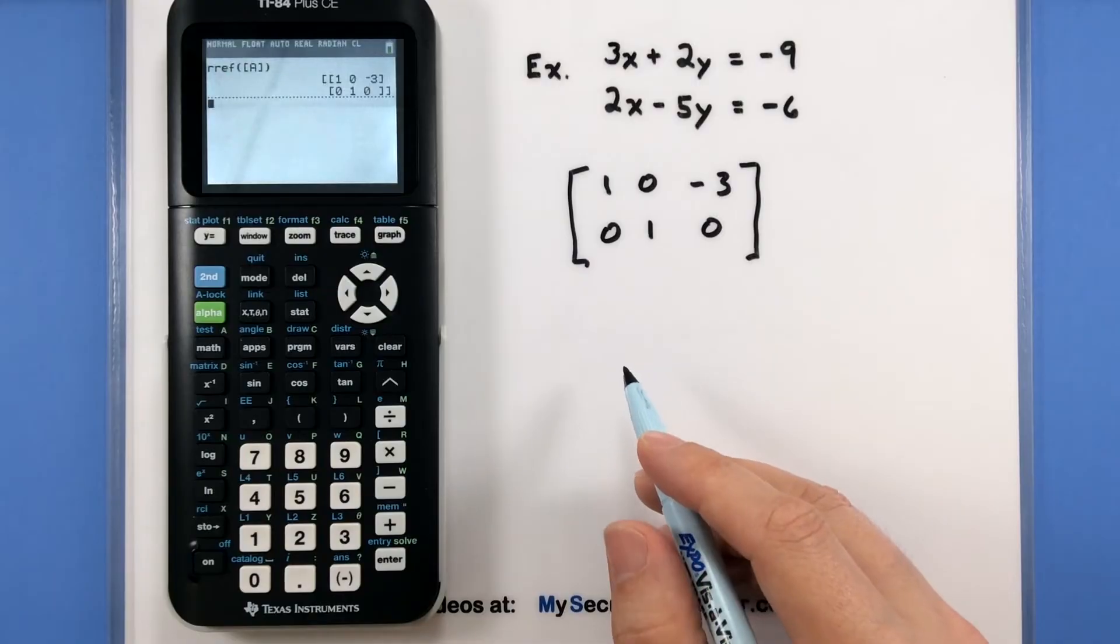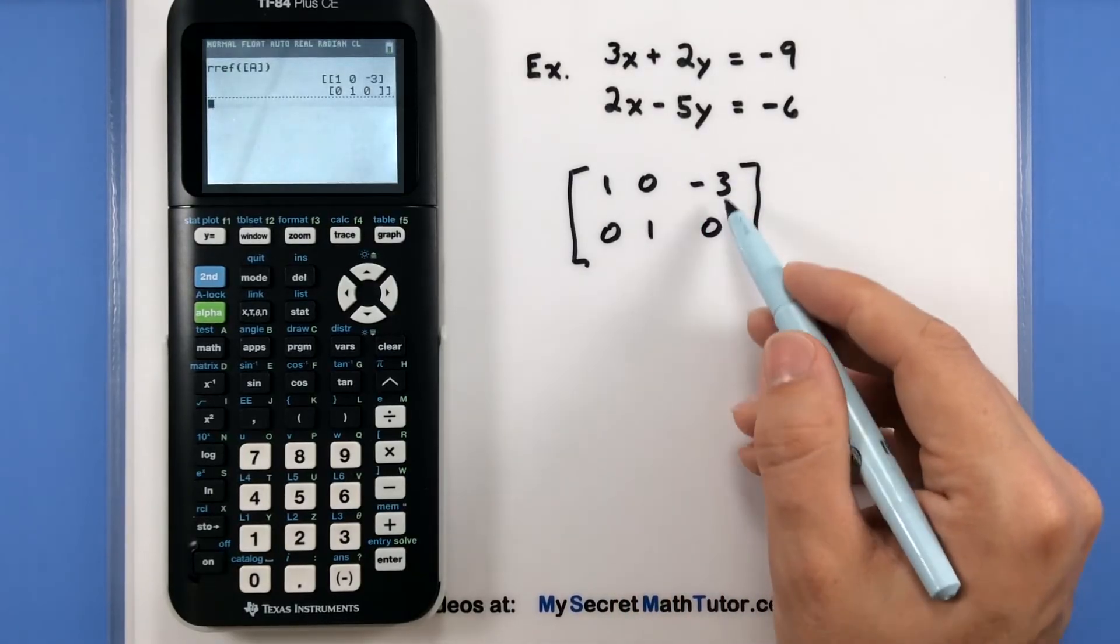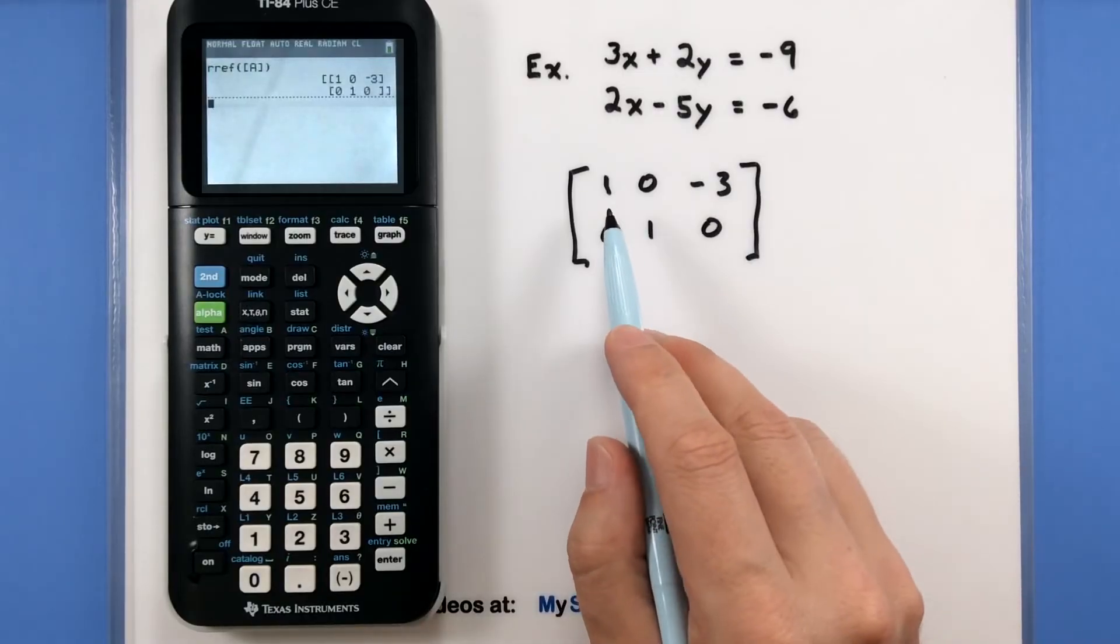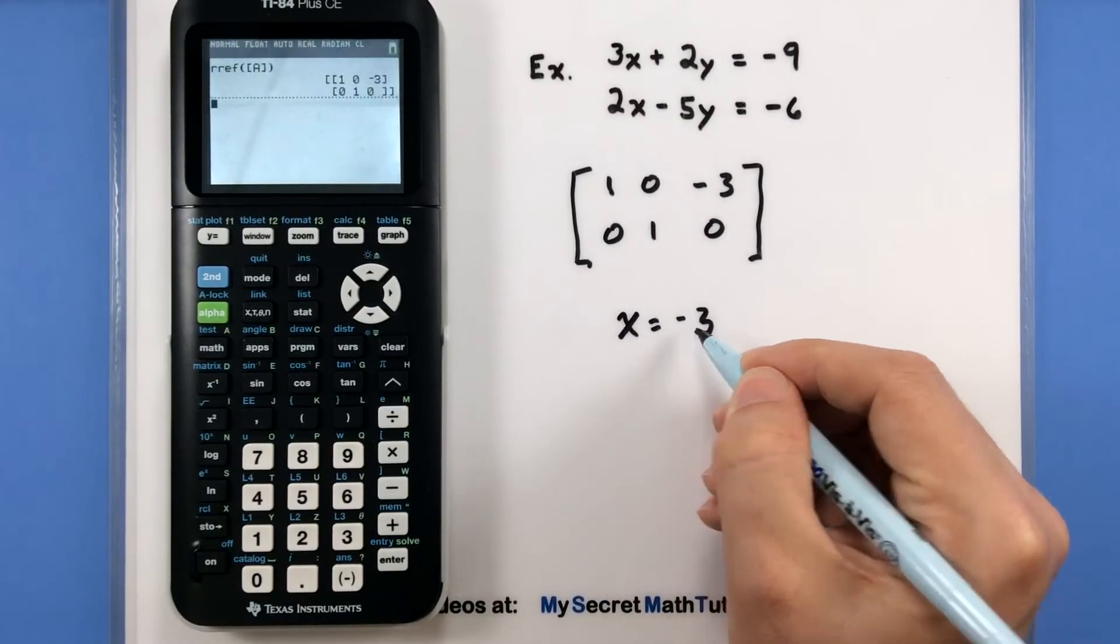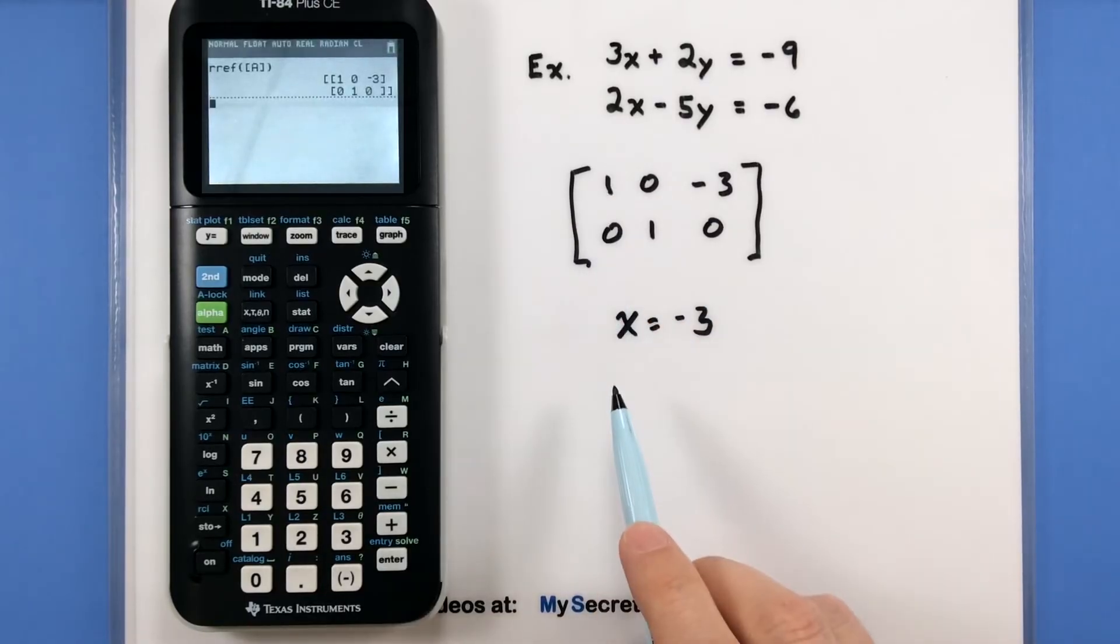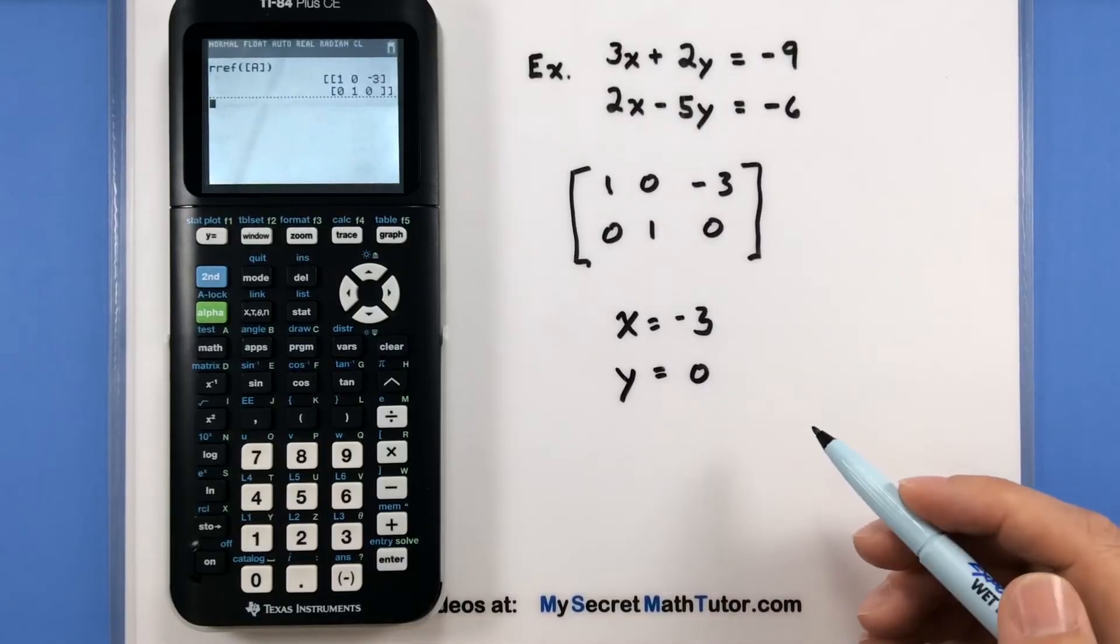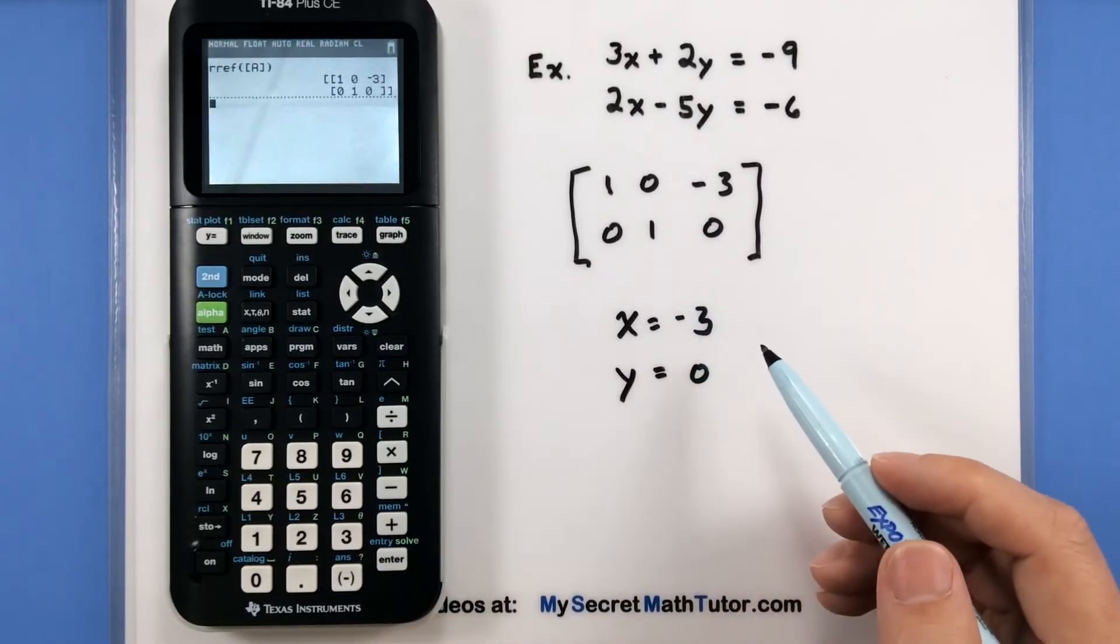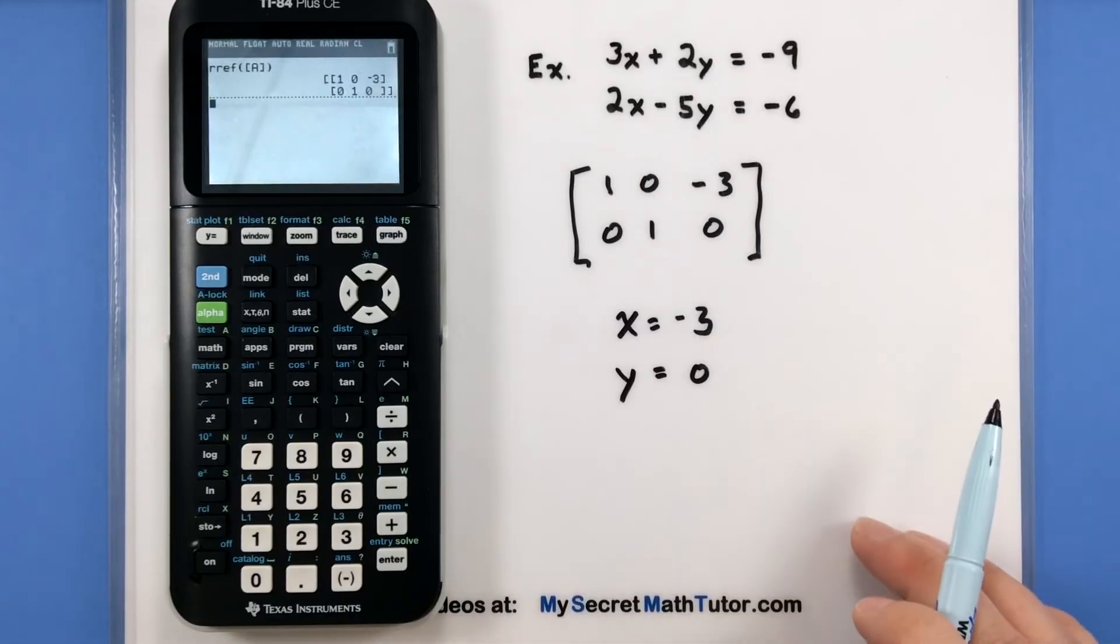We just have to interpret what this means in terms of our solution. Everything in the first row here is an x or coefficient on x. These are coefficients on y's. These are our constant coefficients. So you can read this as x is equal to negative 3 since that 1 is in the x column. And here I have a y is equal to 0 since the 1 is in the y column. So quickly and easily we just have a solution to our original system.